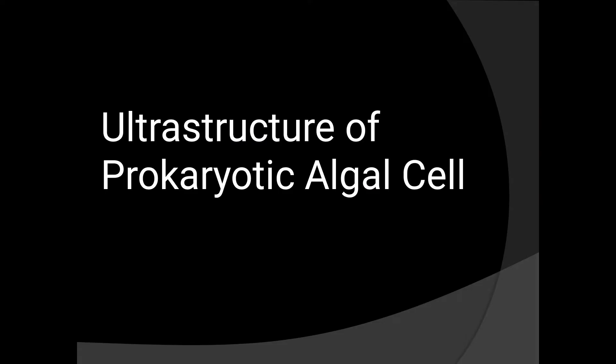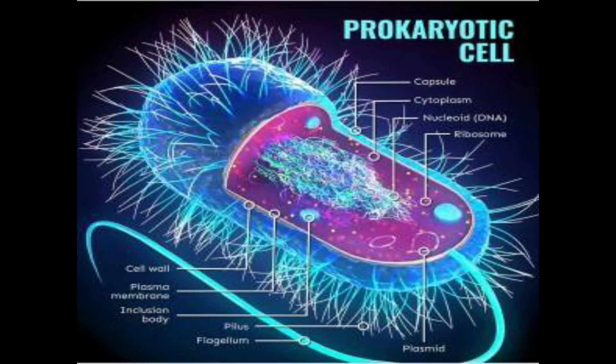First of all we will discuss about the ultrastructure of the prokaryotic algal cell. Here is the diagram of a prokaryotic cell. You can see the cell wall, plasma membrane, inclusion body, polar flagellum, plasmid, nucleoid, ribosome, cytoplasm, and capsule. We are going to discuss about them in detail.